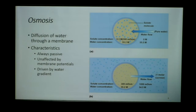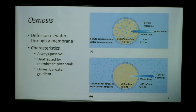Why is water movement unaffected by the membrane potential? Because the electrical driving force has to do with the charge on the particle. Water escapes that — it's under its own influence, which is osmosis. So water movement is unaffected by whether the cell is negative or positive inside, and it's driven purely by the gradient of water, purely by the concentration gradient.